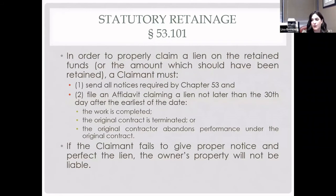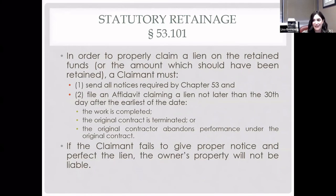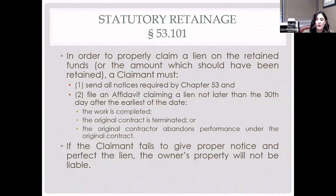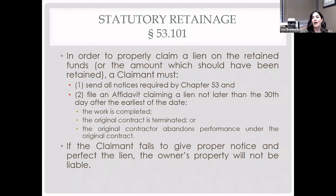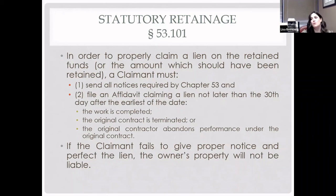You have to send all notices required by Chapter 53 according to your place in the chain and whether it's commercial or residential, and you must file an affidavit claiming a lien no later than the 30th day after the earliest of: the date the work is completed, the original contract is terminated, or the original contractor abandons performance. This deadline can actually move your lien filing deadline earlier than the standard 15th day of the fourth month. If the lien is not filed by this 30th day, you won't have access to the retainage amount — I was just involved in a case where that is exactly how the court decided it.